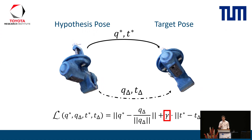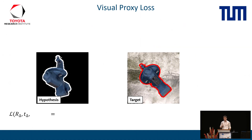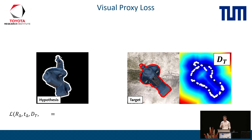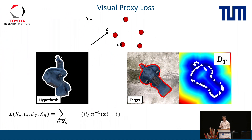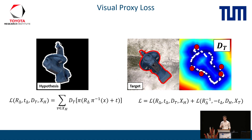We first render both the hypothesis and target pose, then compute the distance transform of the target pose, where each point on the transform measures its distance to the closest contour point. We then sample 2D points on the hypothesis contour, project them back to 3D, and apply our regressed 3D update transformation. Eventually, we project these points onto the distance transform of the target pose and sum up the values — essentially fitting the contour of the hypothesis into the contour of the target. Since the two views do not depict the same contour, we extend the loss to a bidirectional version: we also sample points from the target and fit them into the distance transform of the hypothesis by applying the same update in reverse.